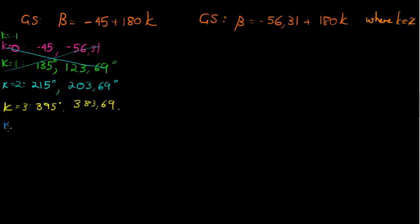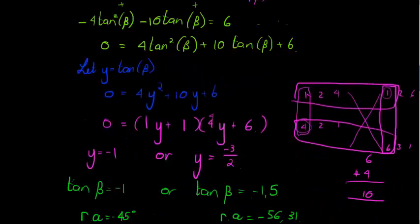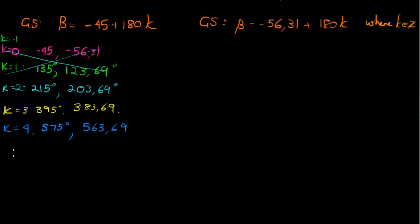Let's try another one. Let's try k equal to 4. In other words, adding another 180. What does this give me? 575 degrees still allowed. And for this one, plus 180 would be 563.69. And that's still allowed because the maximum we are taking is 615. They're less than 615.